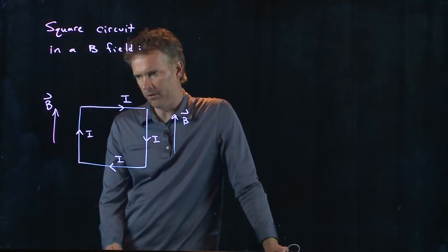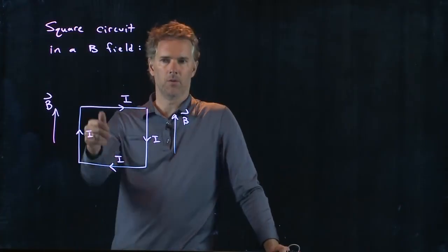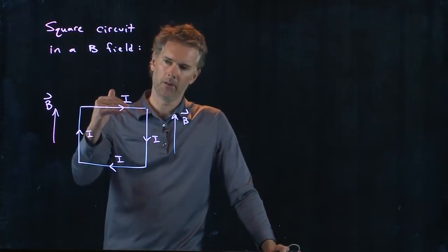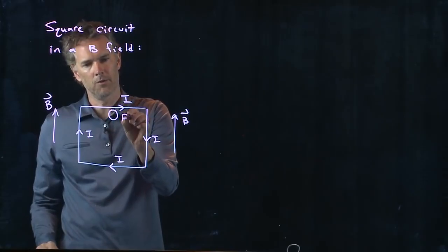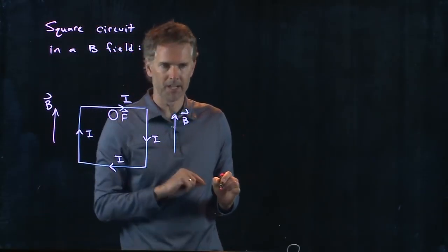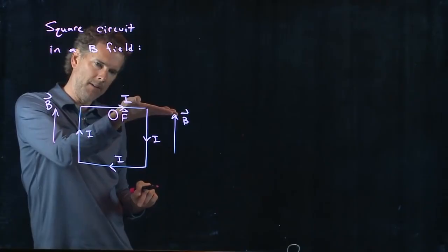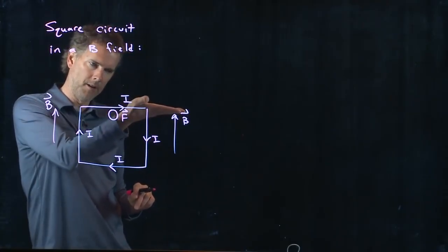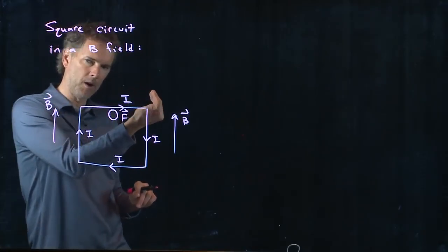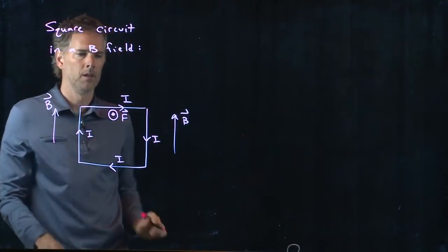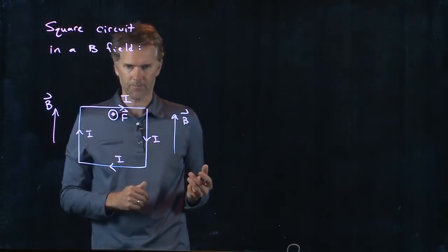We know that the force on the top side is either going to be out of the screen or into the screen. It has to be perpendicular to I and perpendicular to B. So on this top side, what should I draw for the force? Should I put a dot or an X? Let's try it. I is the direction of your straight finger. You curl it into the direction of B. If you do I cross B you should get something coming towards you. I cross B is coming back towards you, coming out of the screen.